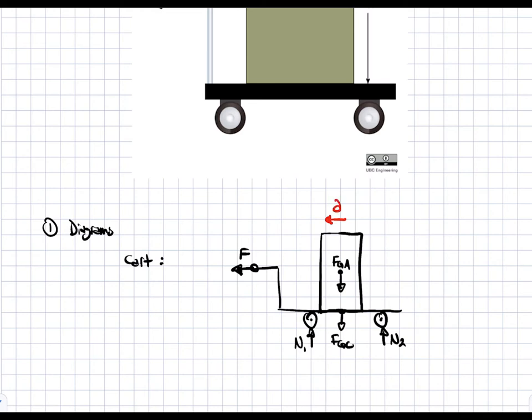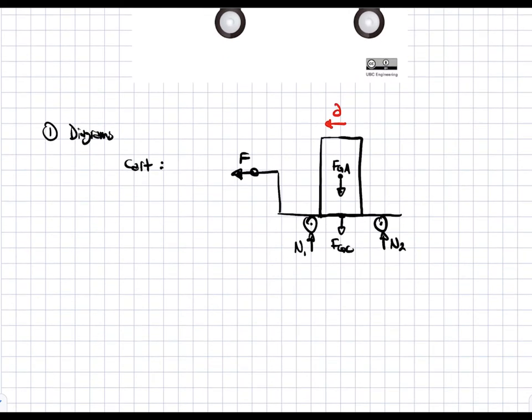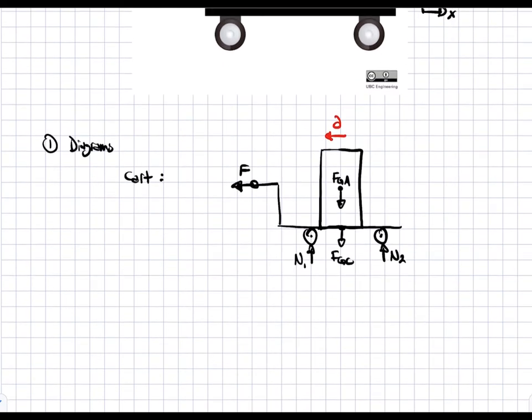We're going to specify a coordinate system: positive x to the right, positive y up, and moments are positive counterclockwise. This is our free body diagram of the whole system together — cart and block — and you'll see why we need this later.